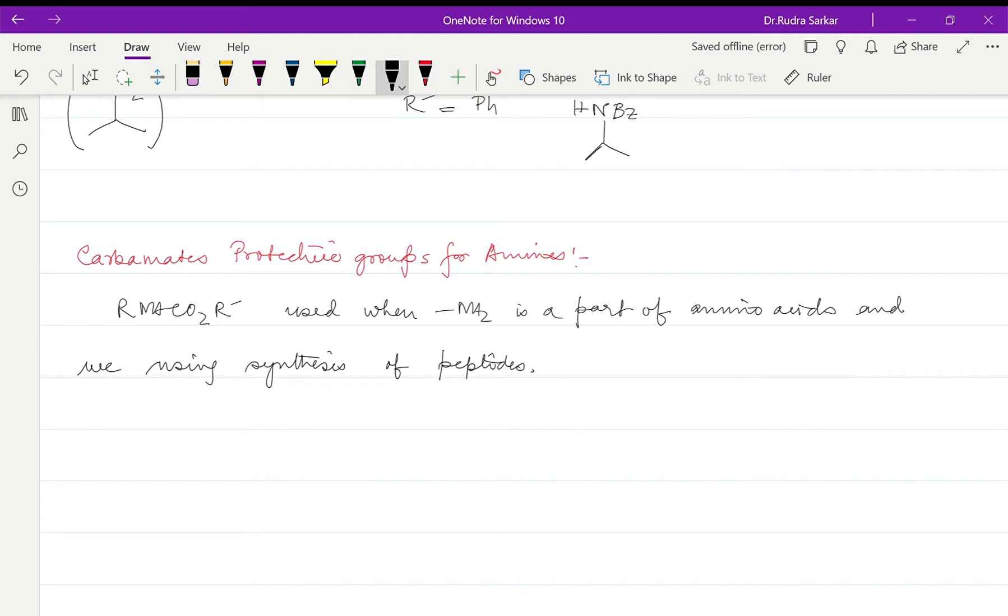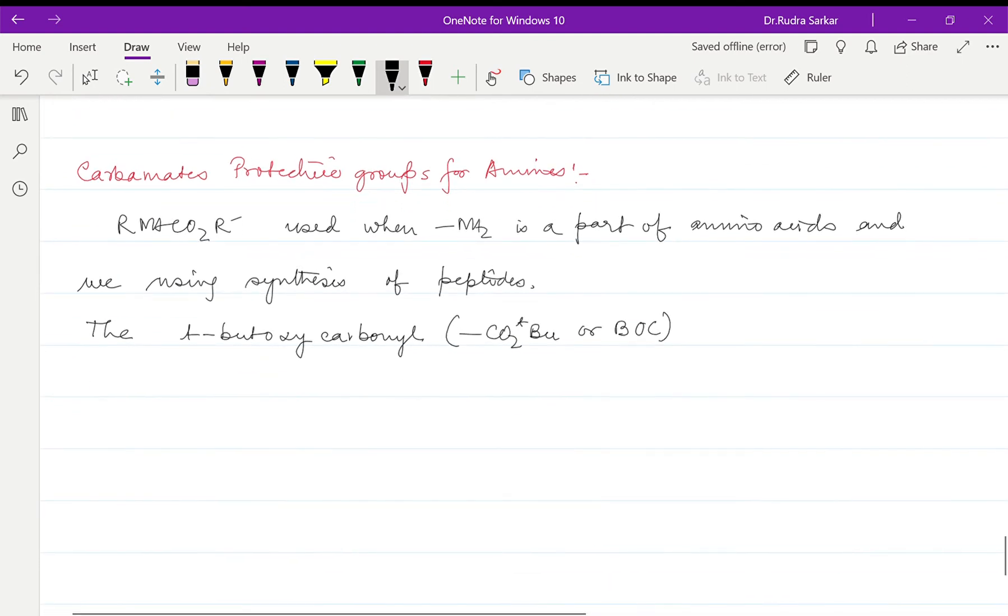One example is tertiary butoxycarbonyl, which can be represented as CO2-tBu or also called Boc.